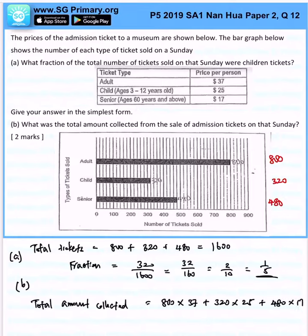480 times $17. And that would be $45,760. That is the answer for this question.